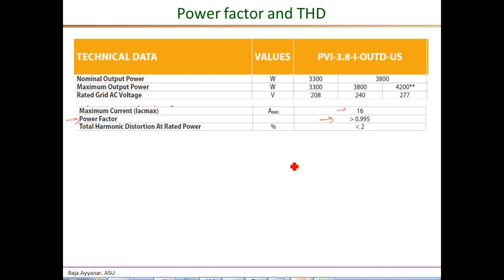A key performance metric is the THD — the total harmonic distortion — in the line current injected into the grid. Any grid-tied system will have power quality requirements, and for a PV string inverter connected at the distribution level the requirement is on the distortion in the line current. It is usually required to be less than 5%, and this restriction becomes more and more stringent as the penetration levels of distributed PV generation become higher in distribution systems.